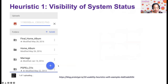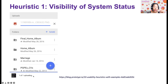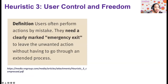The first heuristic: Visibility of System Status. We all know this — when you're uploading a file to Drive or Dropbox, you can see how far along the upload is and how long it will take. Sometimes it shows a countdown: 30 seconds, 29, 28. This is very helpful because you know whether to wait or go get a coffee. The status is visible, and it gives the user insight into what's happening.